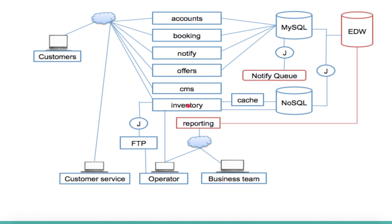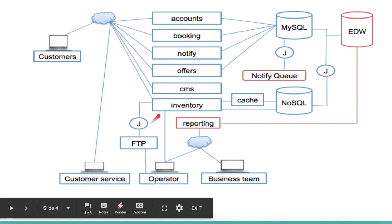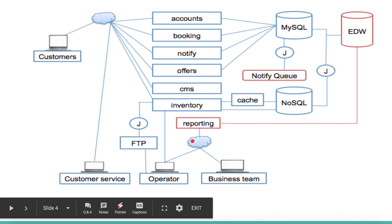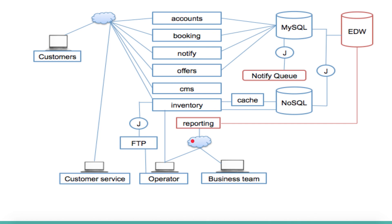The next service is the inventory system, which plays a major role in a bus ticketing system. When you search for a bus ticket, the results — what buses are available, when they depart, etc. — all come from the inventory system. As discussed earlier, this inventory data is fed by operators and validated by the company's engineers. The inventory system is not only used by customers — customer service also interacts with it to book tickets on behalf of callers.